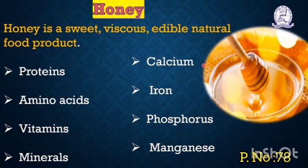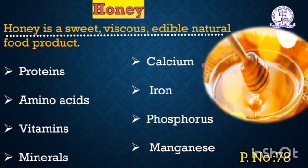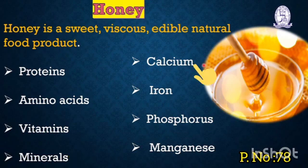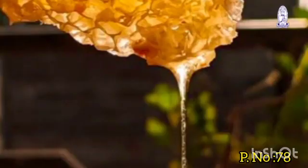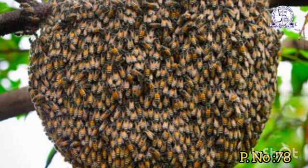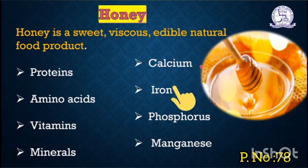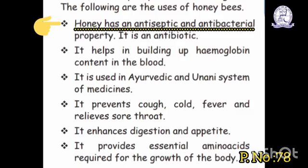Honey is a sweet, viscous, edible natural food product. It contains proteins, free amino acids, vitamins, and minerals like calcium, iron, phosphorus, and manganese. Honey has antiseptic and antibacterial properties.